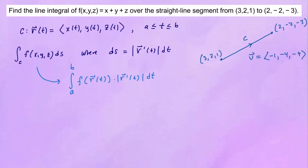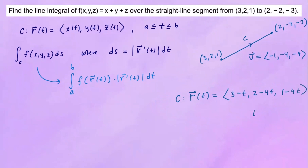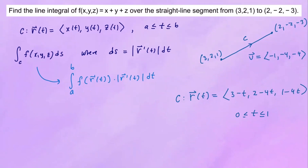That means our curve C is defined as R of T, which in vector form starts at the initial point and adds the direction multiplied by T. So we'll have 3 minus T for the x-component, 2 minus 4T for the y-component, and 1 minus 4T for the z-component, with T going from 0 to 1. When T equals 0 you're at the initial point, and when T equals 1 you're at the final point.